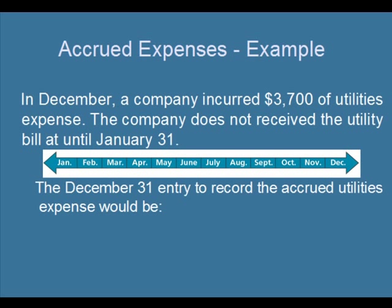An example of an accrued expense is where a company has incurred $3,700 of utilities in December. The company may not receive the bill until January 31st, so they had or used $3,700 worth of utilities in December, but they're not going to pay them or receive the bill until the next January. If a company wants to prepare financial statements on December 31st, we have to make sure that those utilities are recorded in the books of the company as of December 31st, so we have to do a journal entry to record the accrued utility.